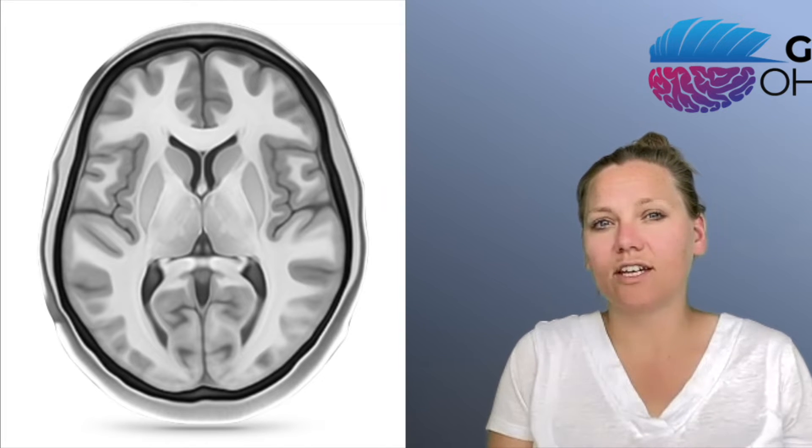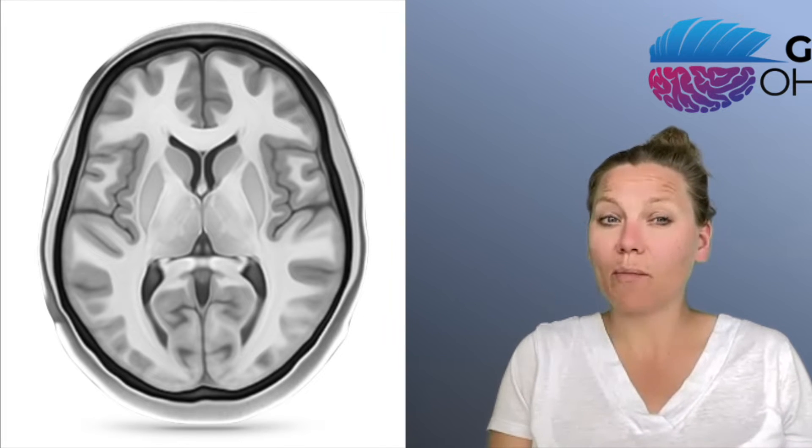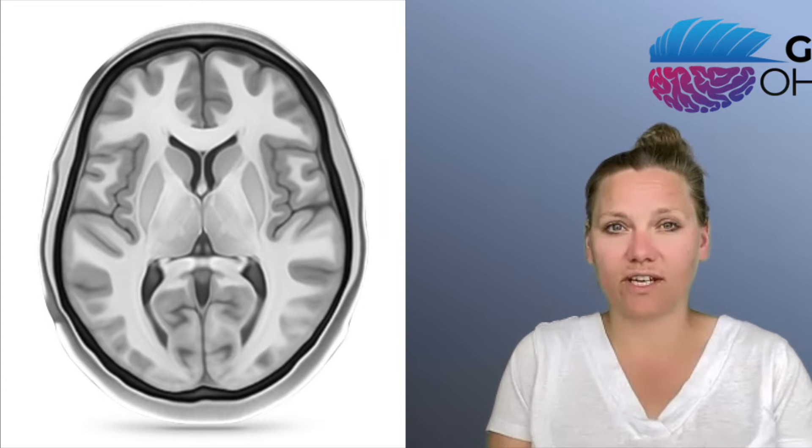Coming back to the theme of the workshop, in order to define functional territories, we need to parcellate the brain within a common anatomical framework. As a result, parcellation methods use group average templates to make individual brains comparable and to define functional territories. However, while using a common anatomical framework or template is helpful to compare brains, it is also important to remember that we are all different.